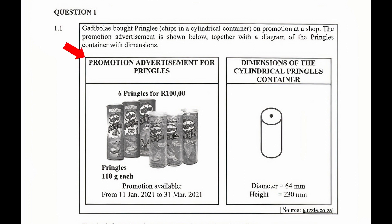On the left we are shown an advertisement that promotes six Pringles containers for 100 rand. Each Pringles container has a mass of 110 grams and the promotion is available from the 11th of January 2021 to the 31st of March 2021.